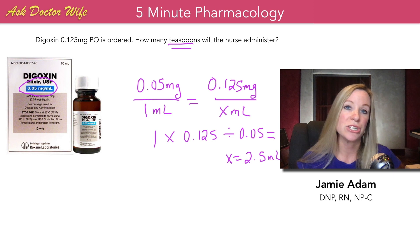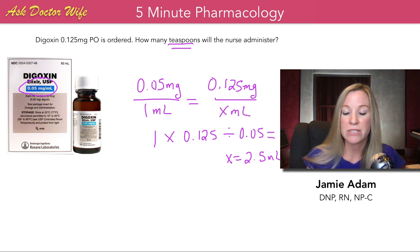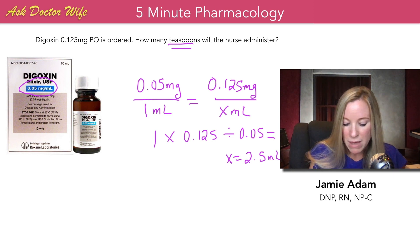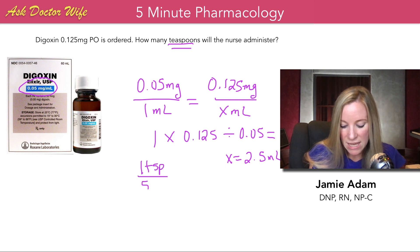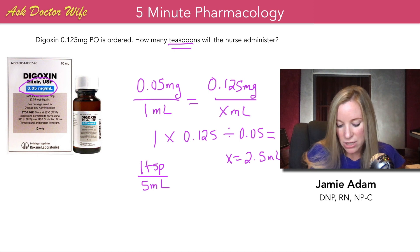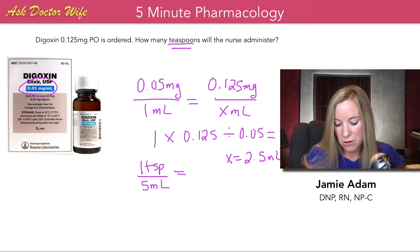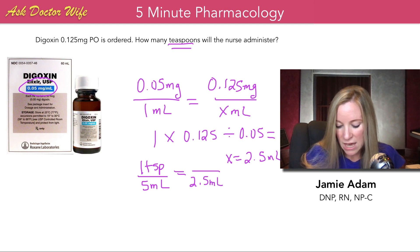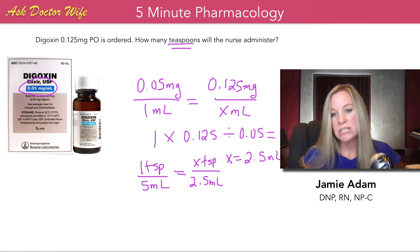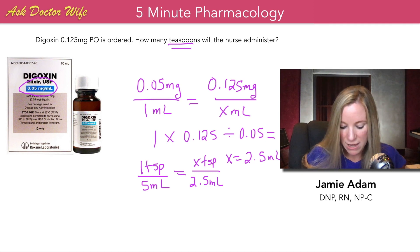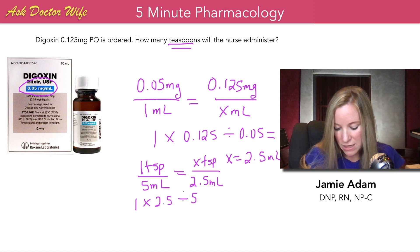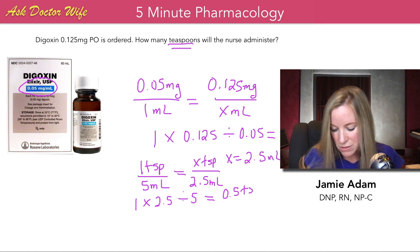We're not done because the question is asking about teaspoons. We need to do a conversion — one teaspoon equals 5 milliliters. So we set up the ratio: if we have 2.5 milliliters, how many teaspoons is this? Cross multiply and divide: 1 times 2.5 divided by 5 equals 0.5 teaspoons, or another way of saying that is half a teaspoon.